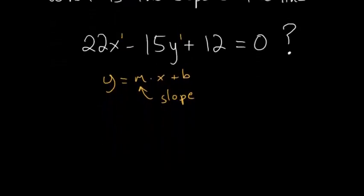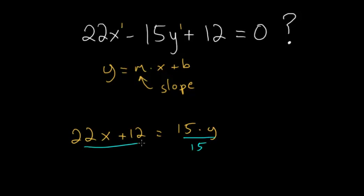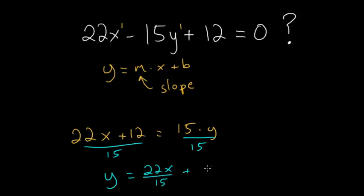To do that, we can add 15y to each side, so that we have 22x plus 12 equals 15 times y. And now all we have to do is divide each side by 15. So now y equals 22x over 15 plus 12 over 15.